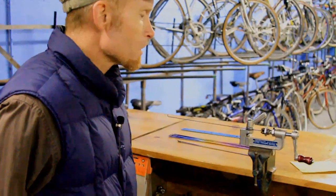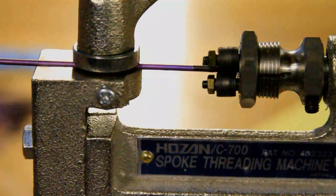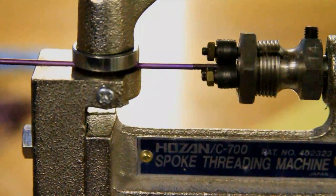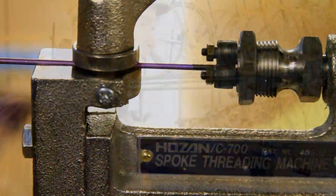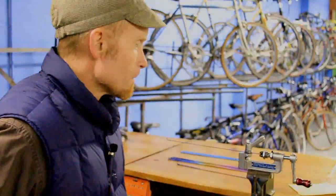So I'm going to demonstrate how to use the Hosen, which is a very cost effective, essentially it's a $180 spoke threading tool. A very simple machine.